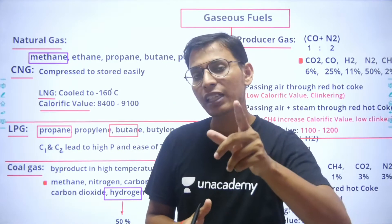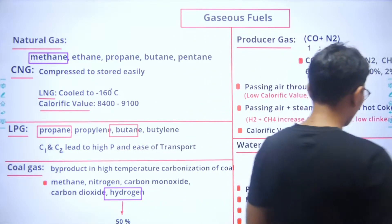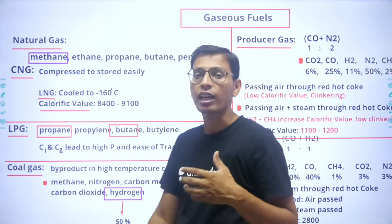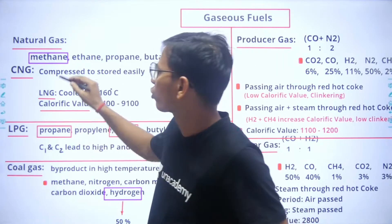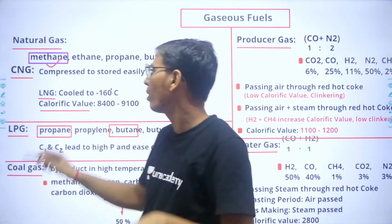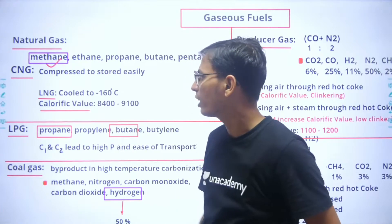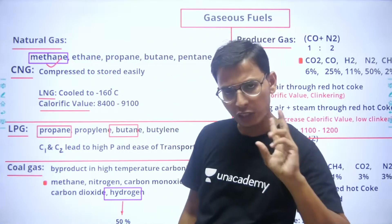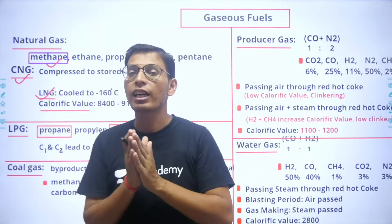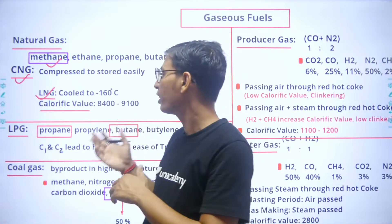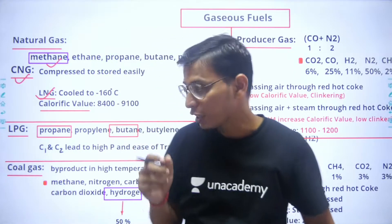The first gaseous fuel is natural gas. Natural gas is generally the compound obtained from the earth's crust. The main fraction is methane. Ethane, propane, butane, and pentane are also available in minor fractions — the major fraction is methane. Natural gas is available as Compressed Natural Gas (CNG) and Liquefied Natural Gas (LNG). CNG is compressed at higher pressure for storage, while LNG is generally cooled at minus 161 degrees centigrade for transportation.